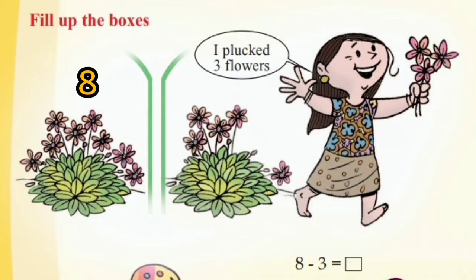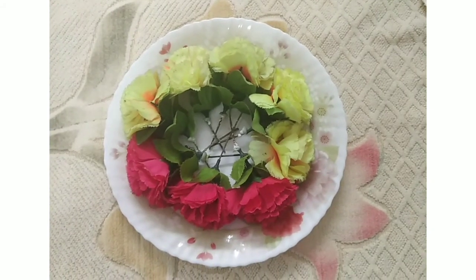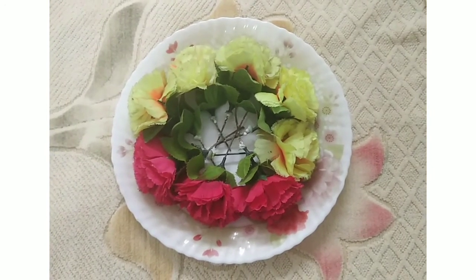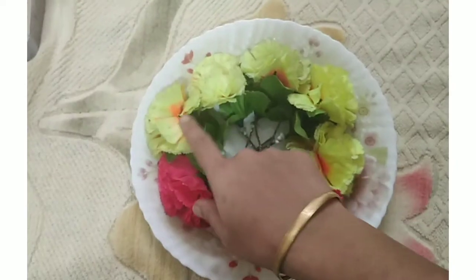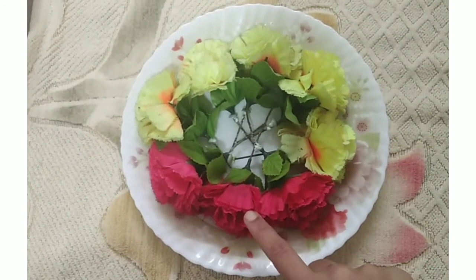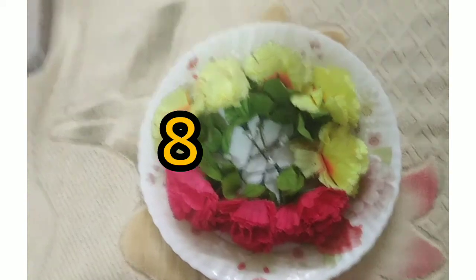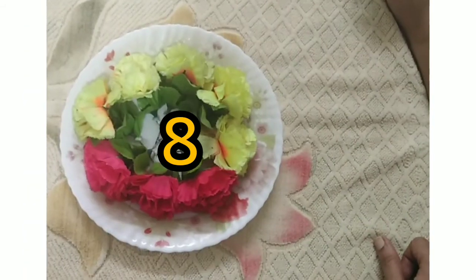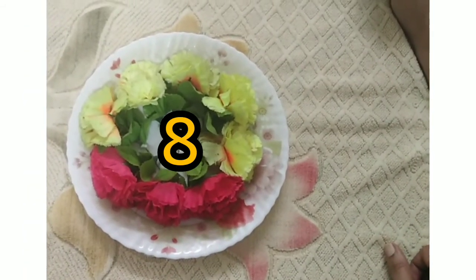There were 8 flowers. But our Lada plucked 3 flowers from the plant. All of you look here — how many flowers are in the plate? Count: 1, 2, 3, 4, 5, 6, 7, 8. There are 8 flowers in the plate.